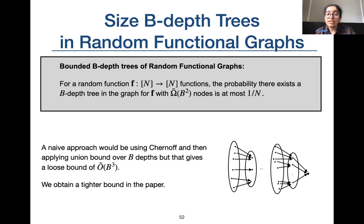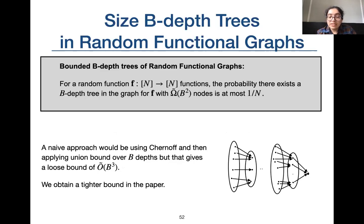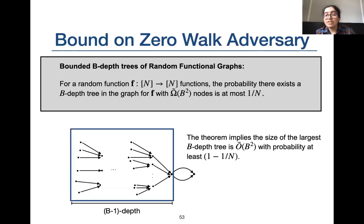Consider a random function f from [n] to [n]. We prove a result that bounds the number of nodes in B-depth trees in the graph of f to order B² with probability at least 1 − 1/n. A naive approach using Chernoff bounds and a union bound over depths 1 through B gives a loose bound of B^q; we obtained the tighter B² bound in the paper.